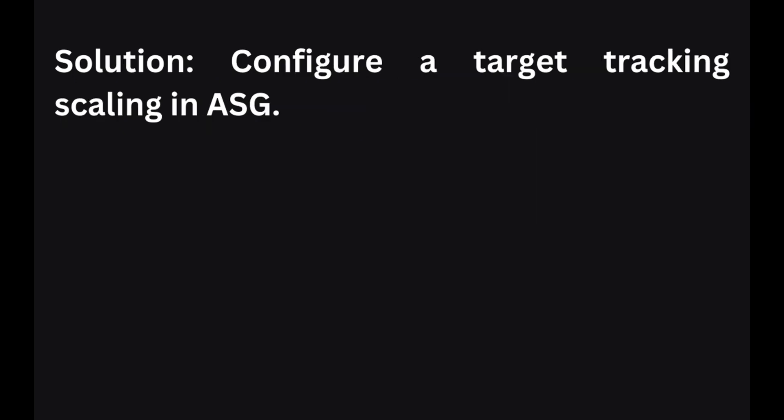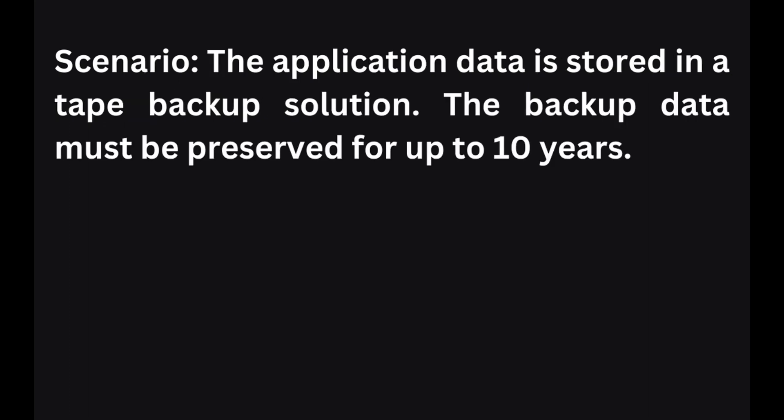In the next scenario, you need a cost-effective solution for over-provisioning of resources. To address over-provisioning and ensure cost effectiveness, you can configure target tracking scaling in an Auto Scaling Group (ASG). This automatically adjusts the number of instances based on predefined metrics, optimizing resource allocation and cost management.